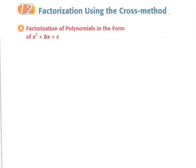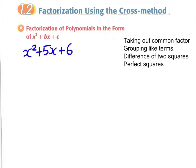For example, let's say we have to factorize the expression x squared plus 5x plus 6. Note that this expression is none of the four factorization techniques we have learned before. We cannot find a common factor here, there are no like terms, and it is not a difference of two squares nor a perfect square format. So we need a new method to factorize this expression.